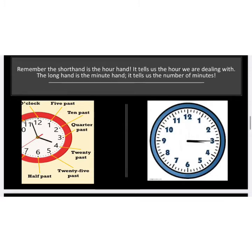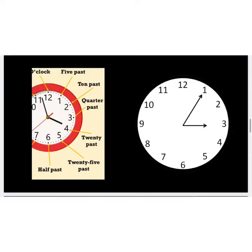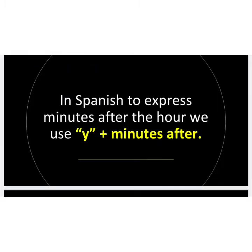So this clock is showing 3:15, or quarter past 3. Let's do the same with this clock. Notice that the short hand, the hour hand, is pointing on the 3, so we are once again dealing with the hour of 3. This time the long hand, the minute hand, is pointing on the 1, and when the minute hand is pointing on the 1 that means it is 5 minutes past. Therefore it is 3:05, or 5 minutes after 3.